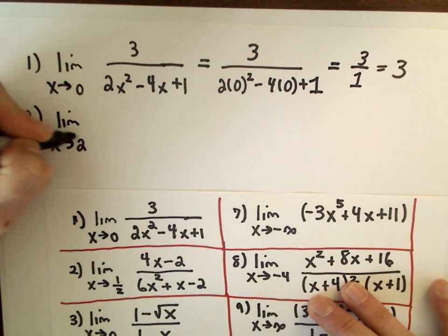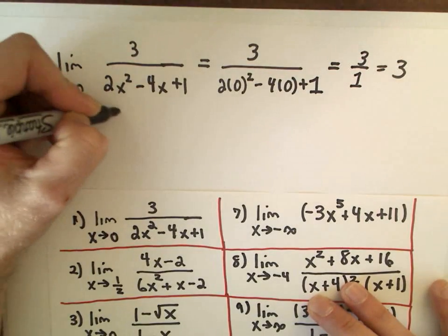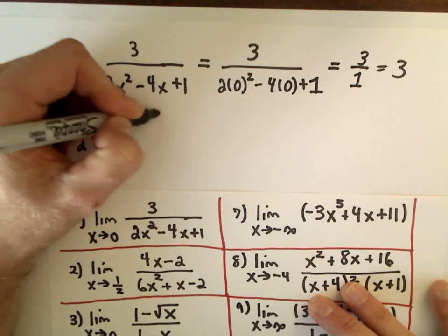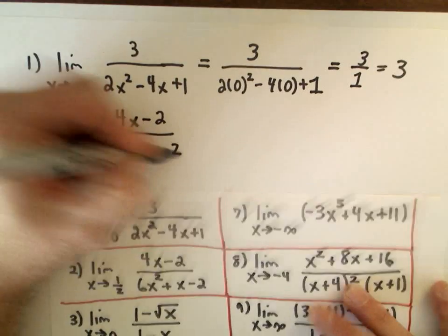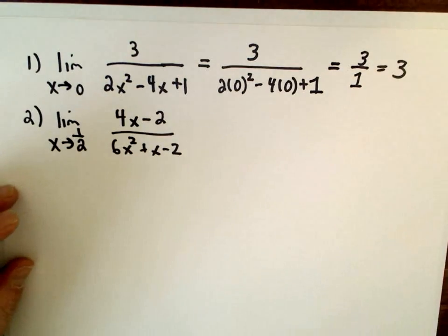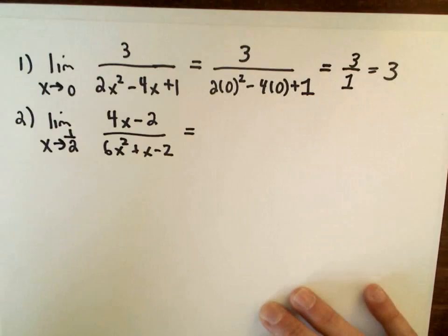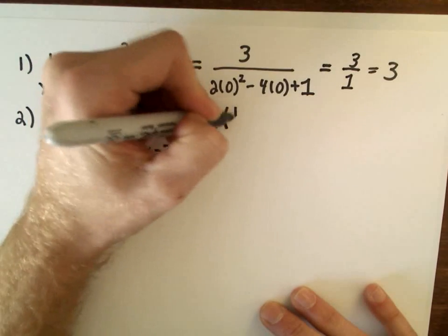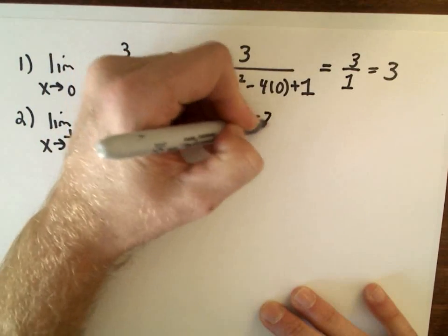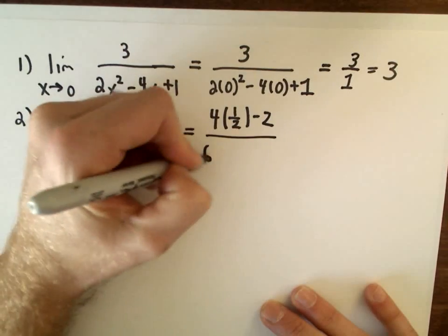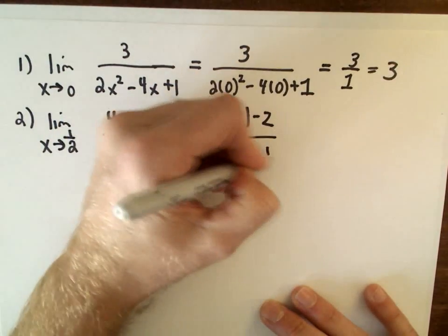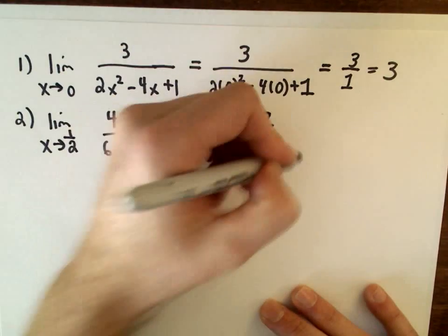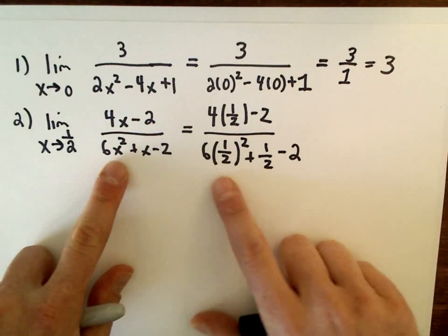Number two, we have the limit as x approaches 1/2 of 4x minus 2 divided by 6x squared plus x minus 2. So the first thing I'm going to do is substitute that in. Okay, so I've got 4 times 1/2 minus 2 divided by 6 times 1/2 squared plus 1/2 minus 2. I'm just replacing all the x's with 1/2.